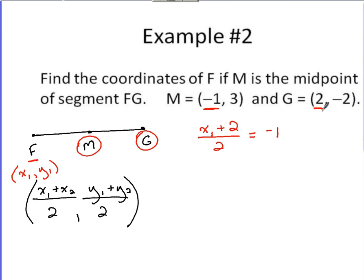As long as I'm setting this all up, I could do the same thing for this y sub 1 plus y sub 2 over 2 part. I know that this equals 3. And y sub 2 would be the negative 2 from over here. So y sub 1 plus, we could just say minus 2 over 2 equals the y coordinate at the midpoint, which is 3.